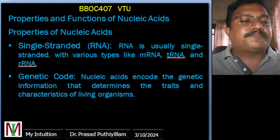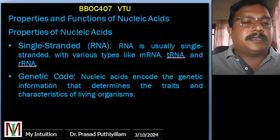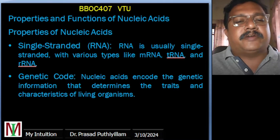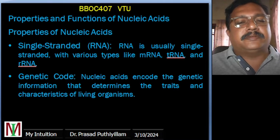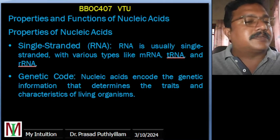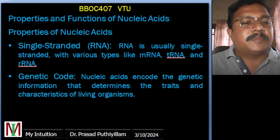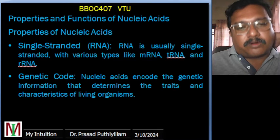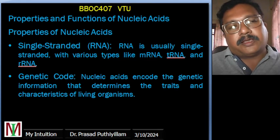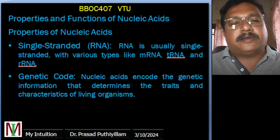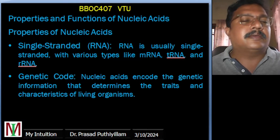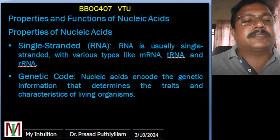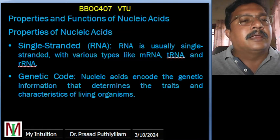Another property is the genetic code. Nucleic acid encodes the genetic code — a set of instructions that determines the characteristics of an organism. This code specifies the order of amino acids in proteins, which ultimately dictates how an organism functions and develops.